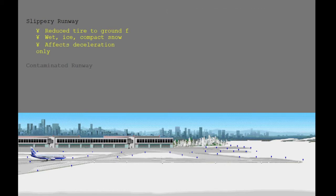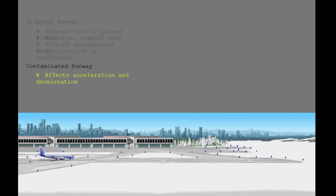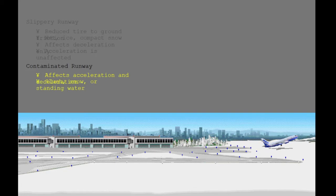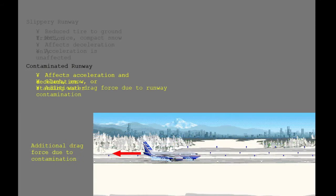A slippery runway only affects the airplane's ability to decelerate; it does not affect the airplane's ability to accelerate. On the other hand, a contaminated runway affects the ability of the airplane to accelerate as well as decelerate. This would include runways contaminated by a measurable depth of slush, snow, or standing water. This runway contamination creates a drag force which resists the airplane's ability to accelerate.